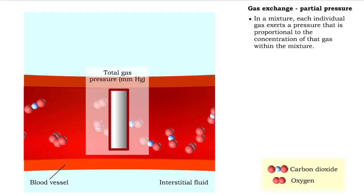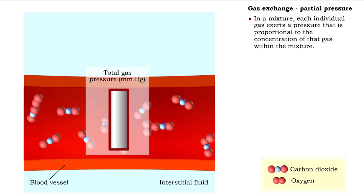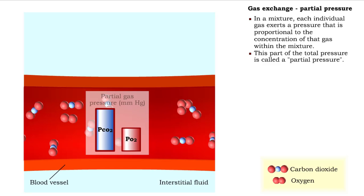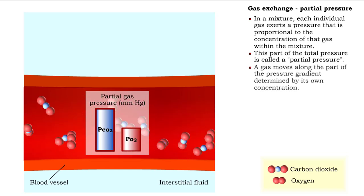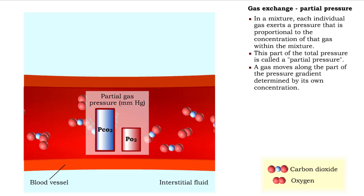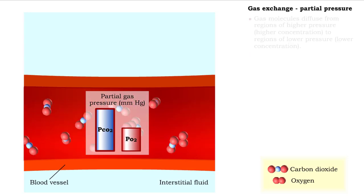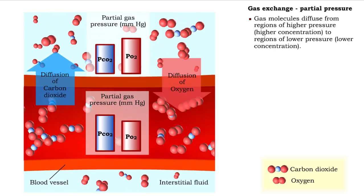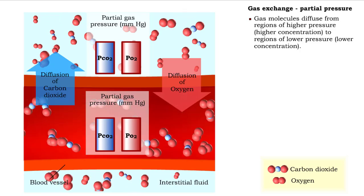In a mixture, each individual gas exerts a pressure that is proportional to the concentration of that gas within the mixture. This part of the total pressure is called a partial pressure. A gas moves along the partial pressure gradient determined by its own concentration, not by concentrations of other gases in the mixture. Gas molecules diffuse from regions of higher pressure, or higher concentration, to regions of lower pressure, or lower concentration.